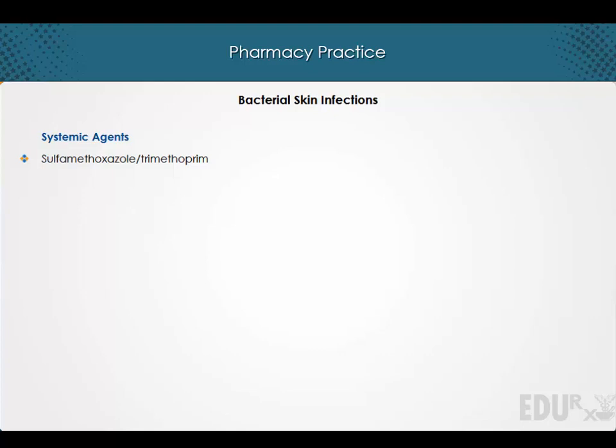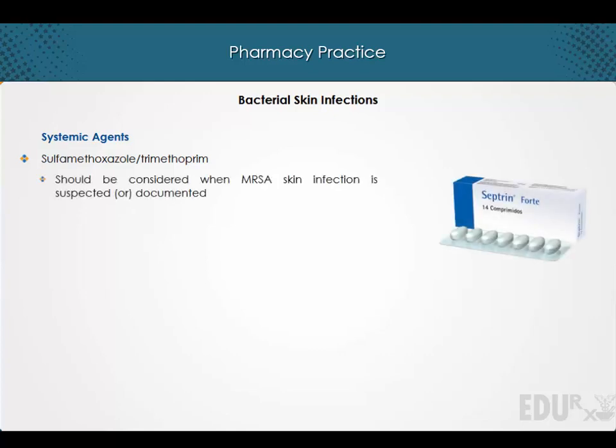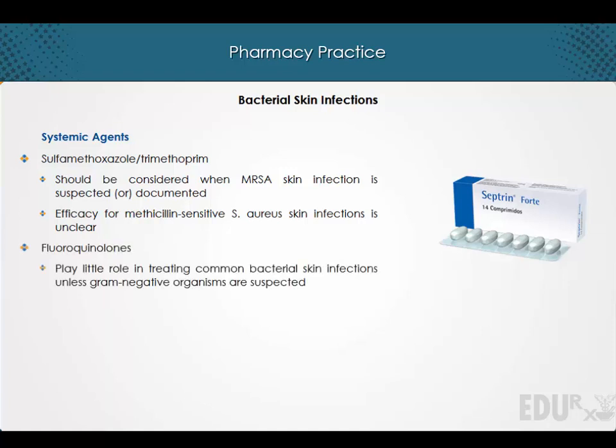Sulfamethoxazole with trimethoprim should be considered when methicillin-resistant Staphylococcus aureus skin infection is either suspected or documented. However, its efficacy for methicillin-sensitive Staphylococcus aureus skin infections is unclear. The fluoroquinolones play very little role in treating common bacterial skin infections unless gram-negative organisms are suspected.